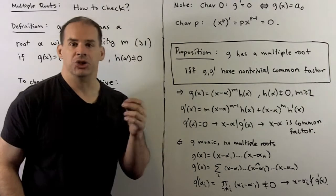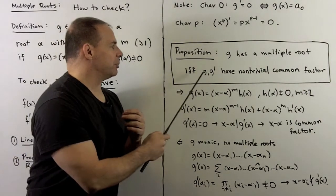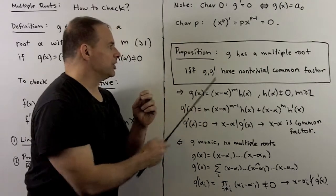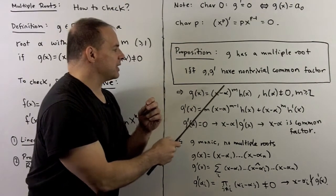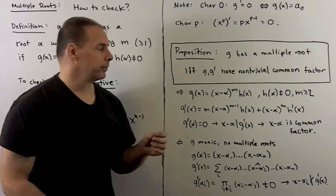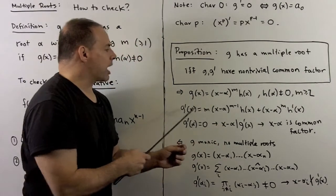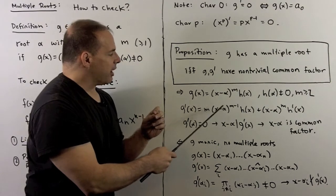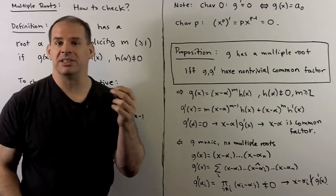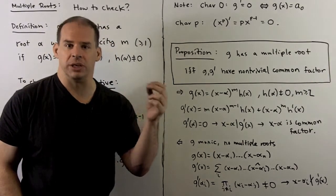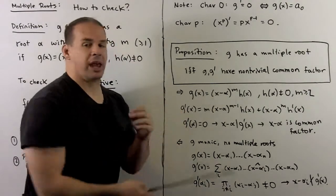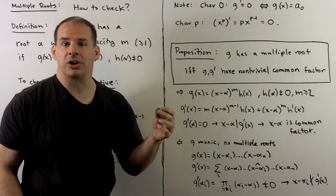Proposition: g has a multiple root if and only if g and g' have a non-trivial common factor. In the forward direction, assume g has a multiple root, so we write g = (x − α)^m · h(x) with m ≥ 2. Taking the derivative using the product rule, we see factors of (x − α) have positive exponents. When we evaluate at α we get zero, so α is a root of g'. Thus x − α divides g', and since α is a root of g, x − α also divides g, giving the common factor x − α.